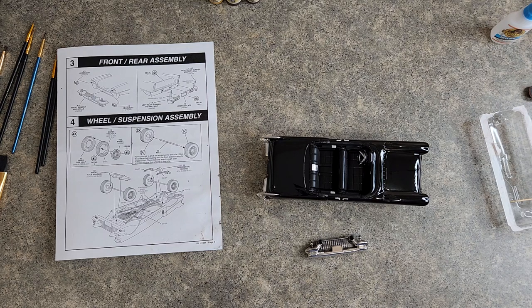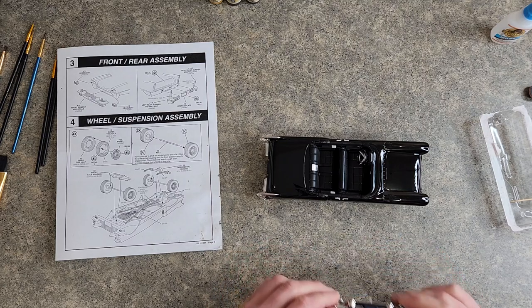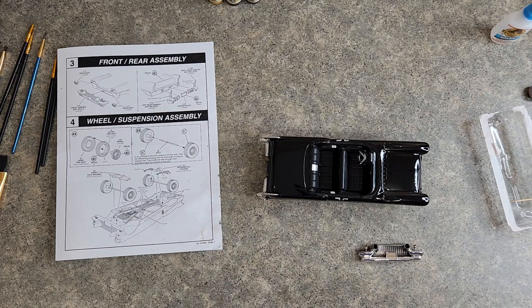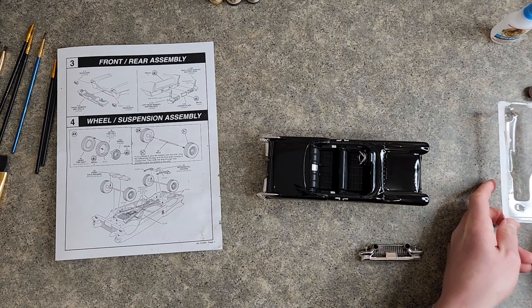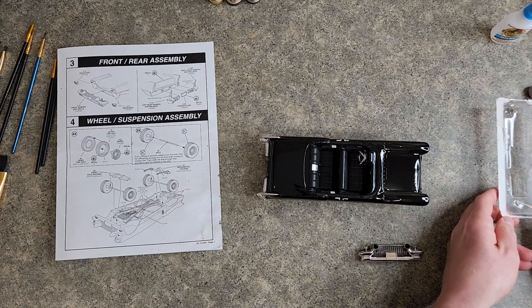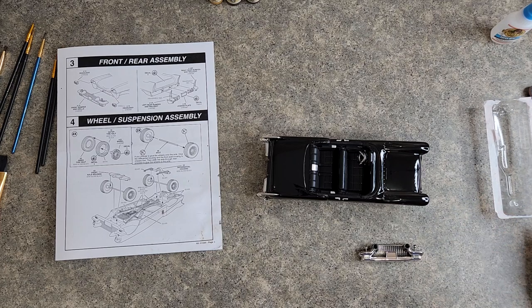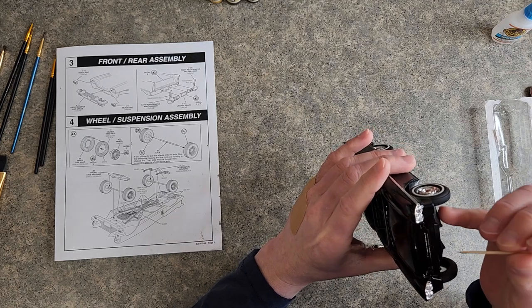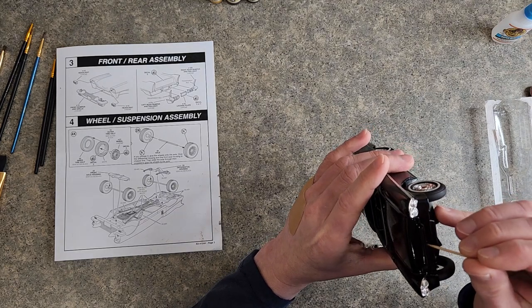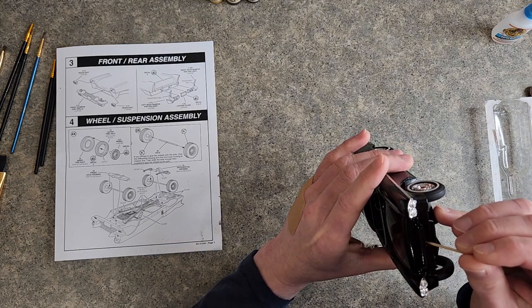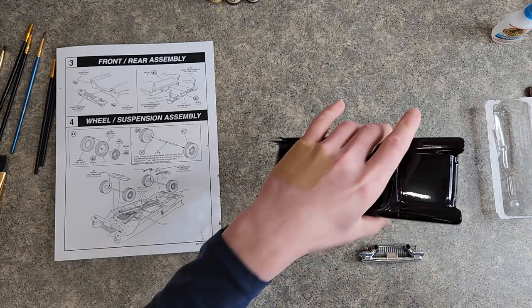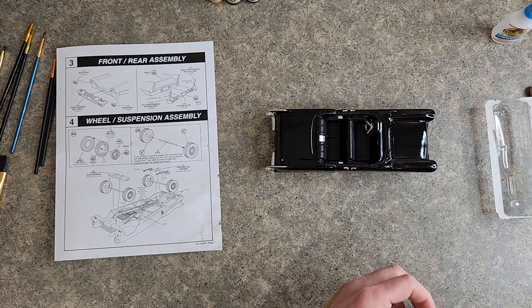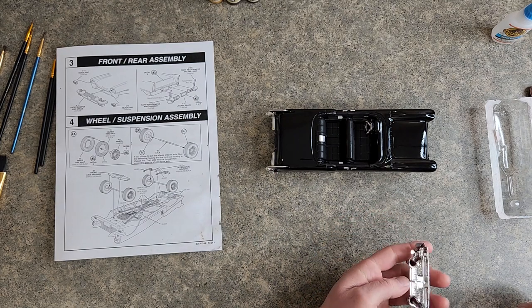We're gonna go ahead and attach this front bumper to this car. I think what I'm gonna do is put a little bit of the glue in the hole in front. I keep wiping my hands off because I'm really worried about getting glue all over everything. Let's get some around in that hole there.